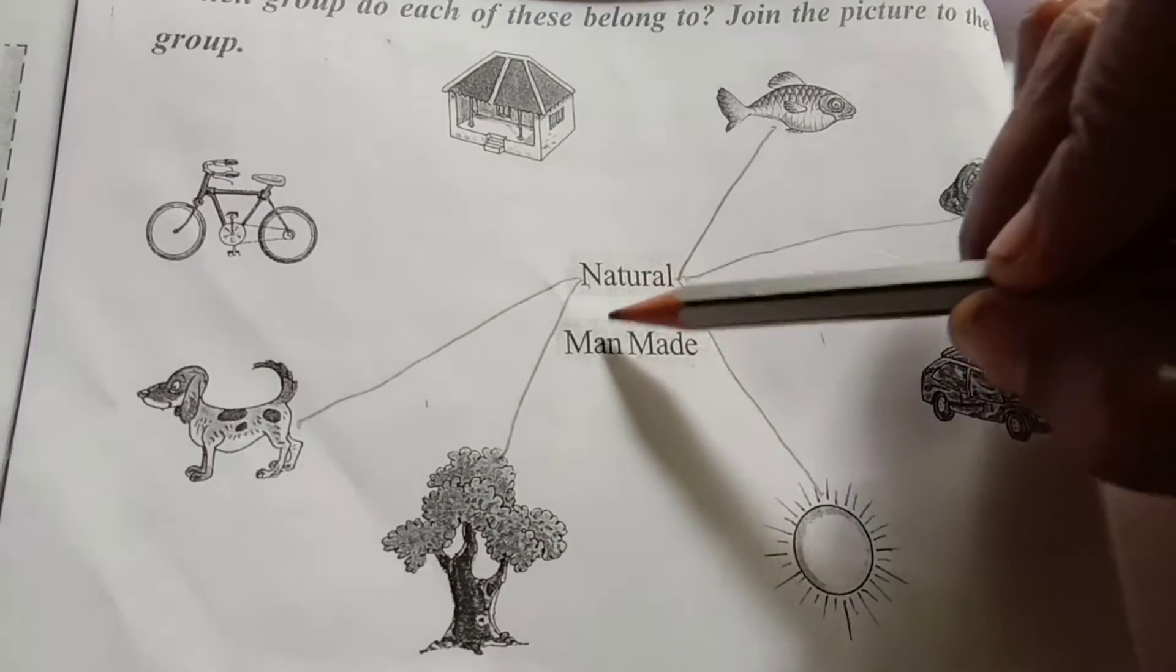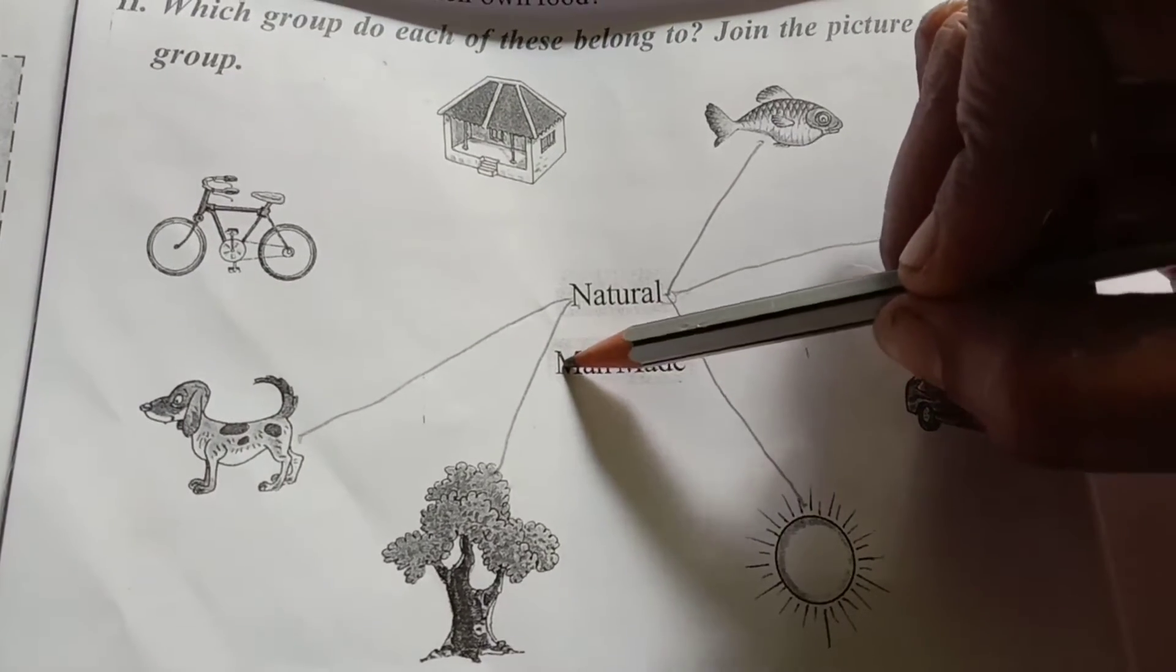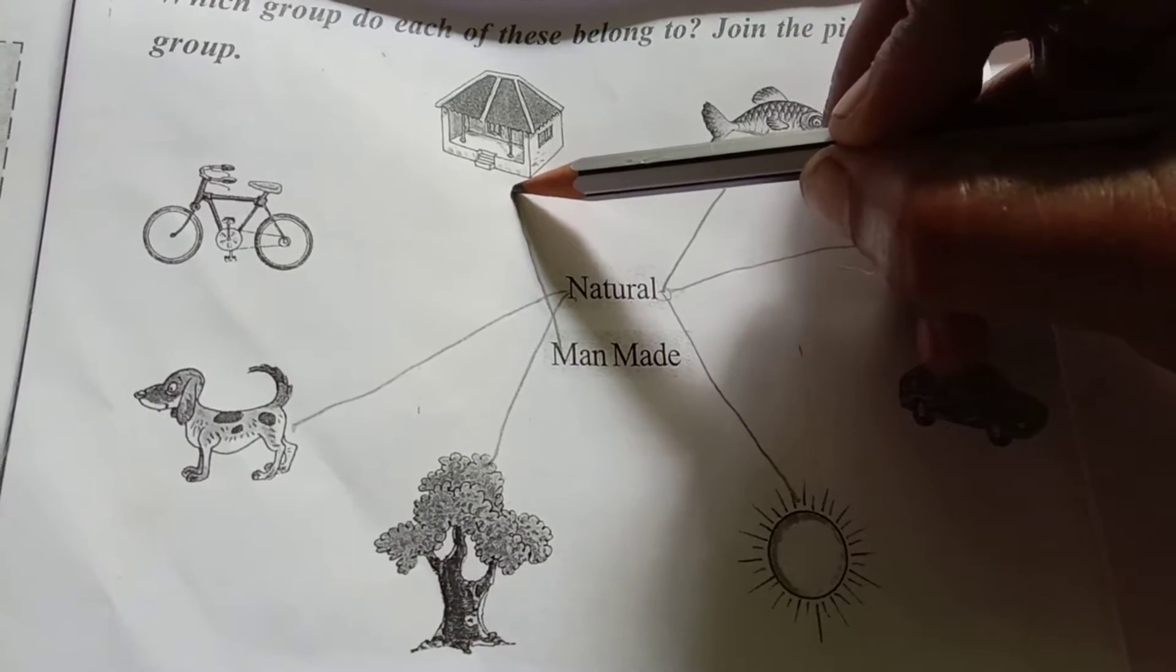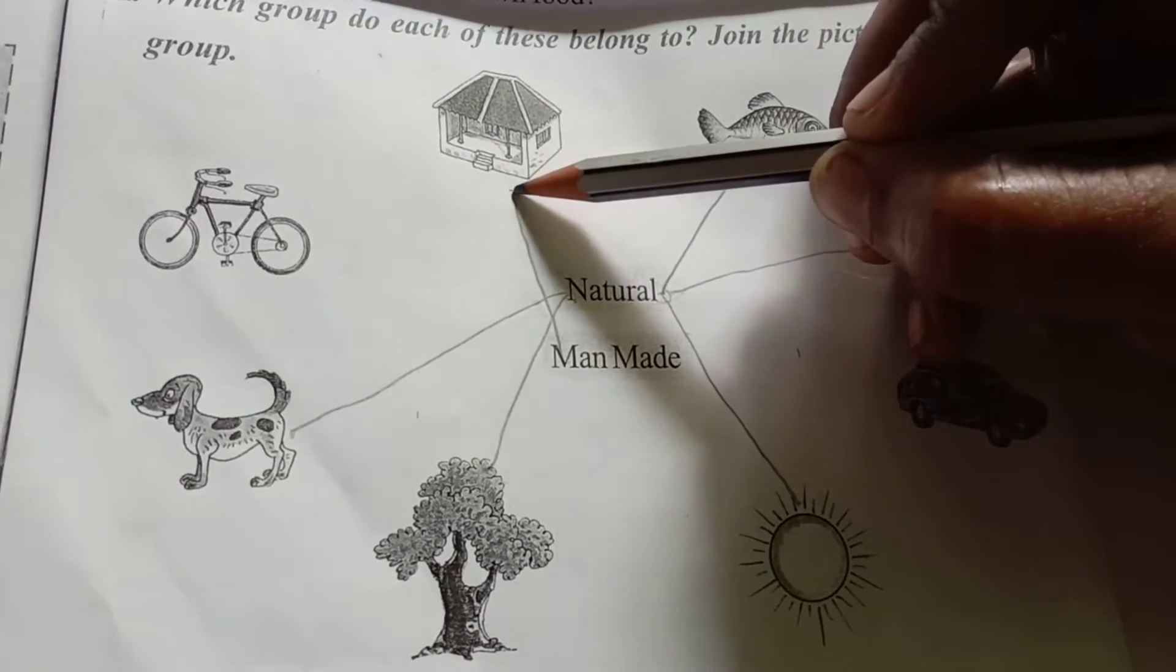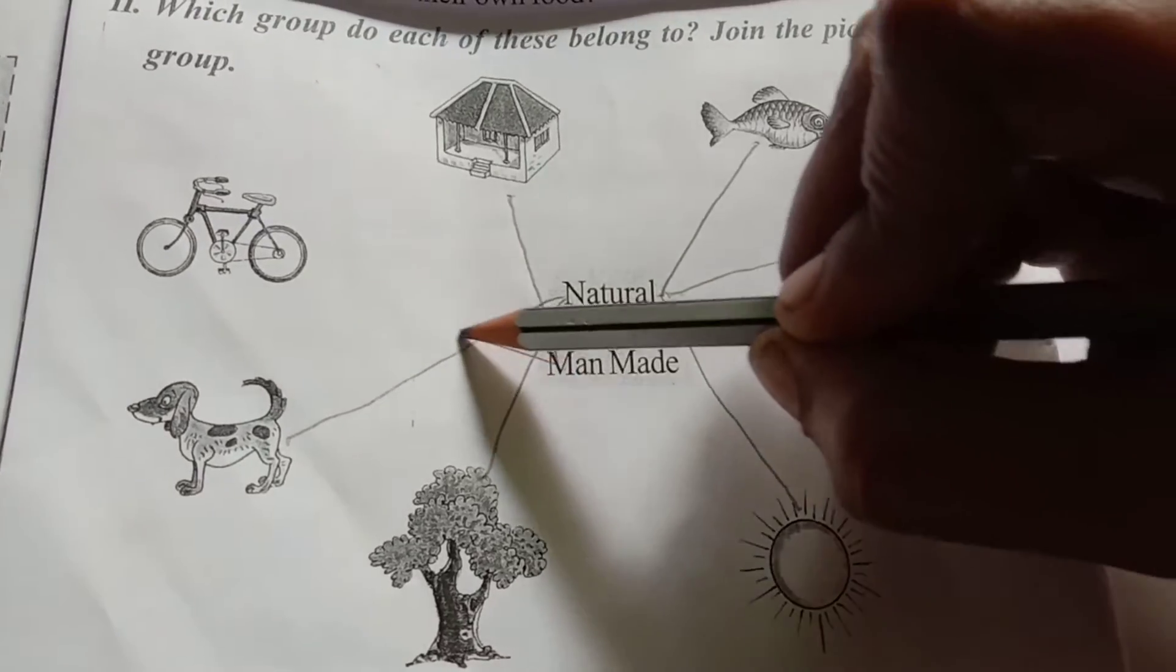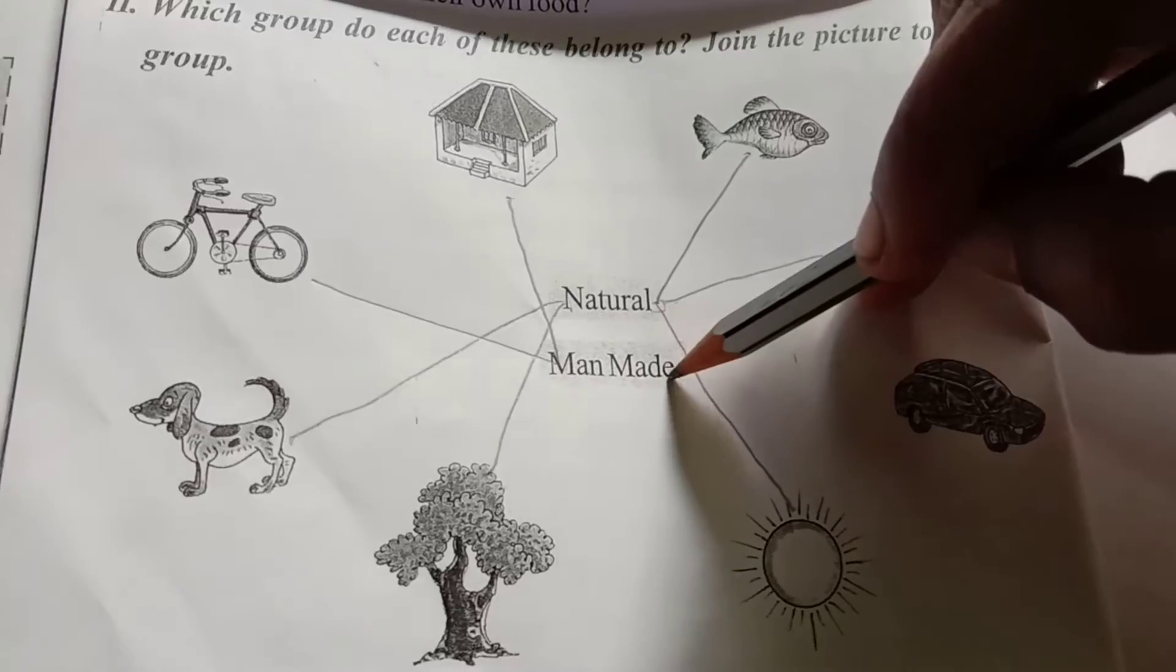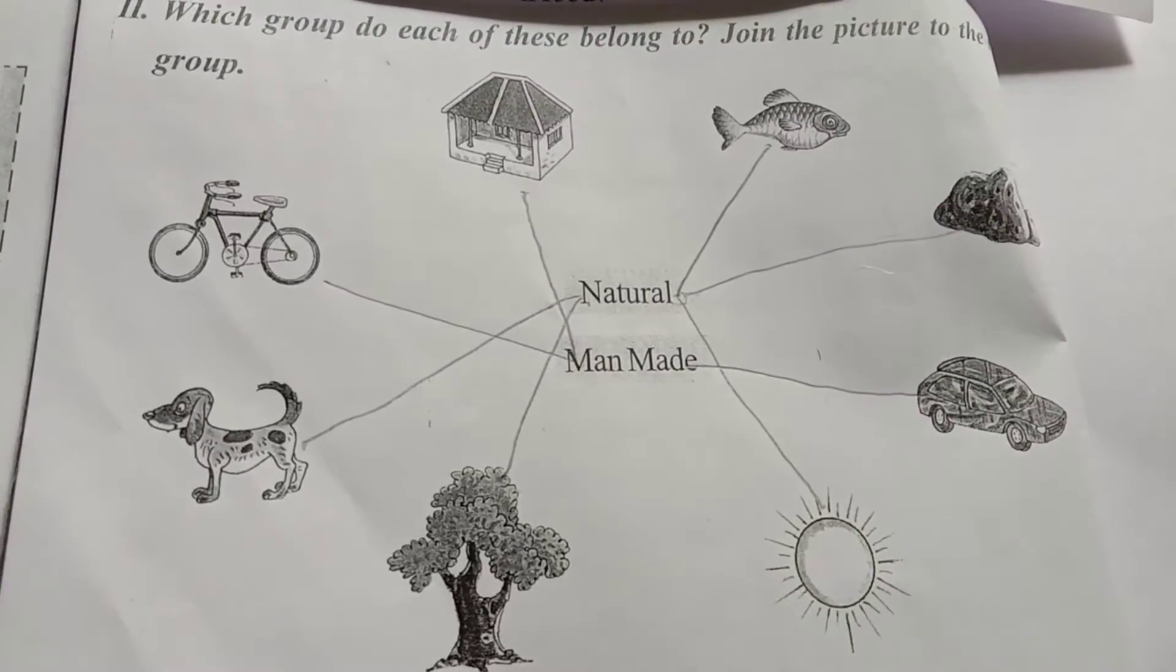Next, man-made. House is man-made. House man-made, nama yalla ready maad kondi roo the house na manushro. Adikke, house is man-made. Next, bicycle is man-made. Next, car is man-made.